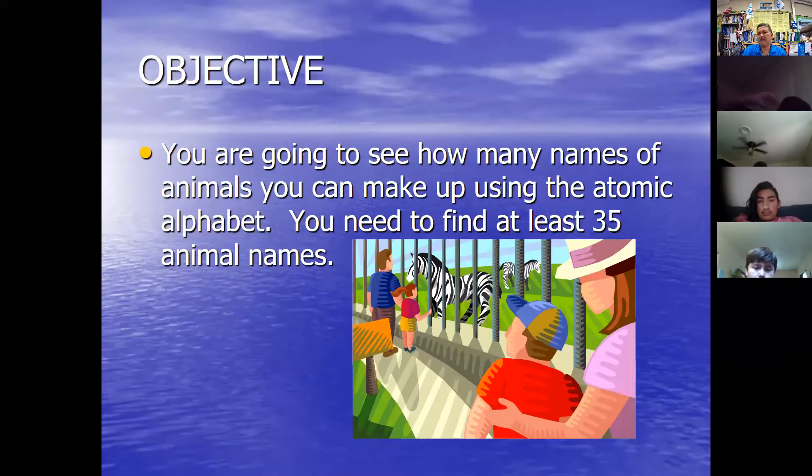You're going to see how many names of animals you can make using the atomic alphabet. In other words, each element in the periodic table of elements has a symbol, like oxygen is O, hydrogen is H, carbon is C, cobalt is Co. You're going to take those combinations and spell names of animals.